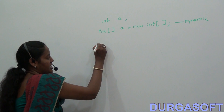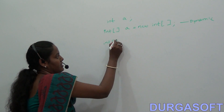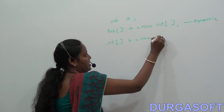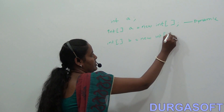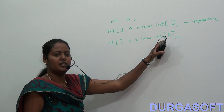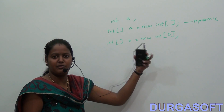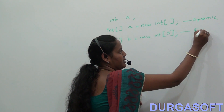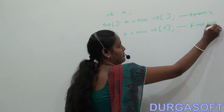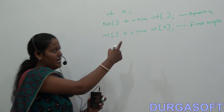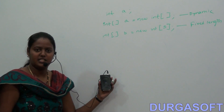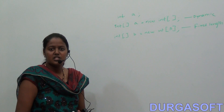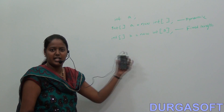For a fixed length array, you write: array name equals new int, and here you mention the size — for example, 5, meaning five elements in the array. That is called a fixed length array. If you do not mention the size, it is dynamic. So these are the two types: dynamic and fixed length.